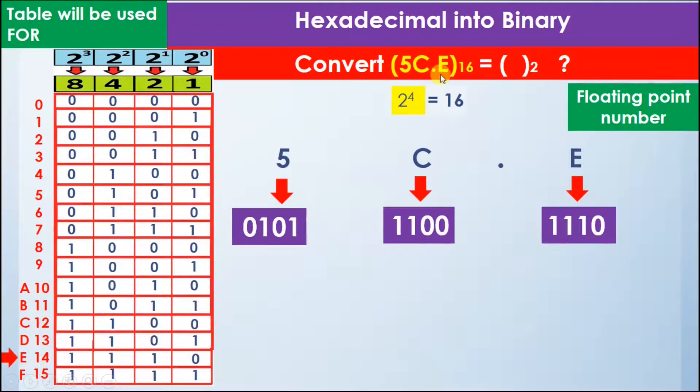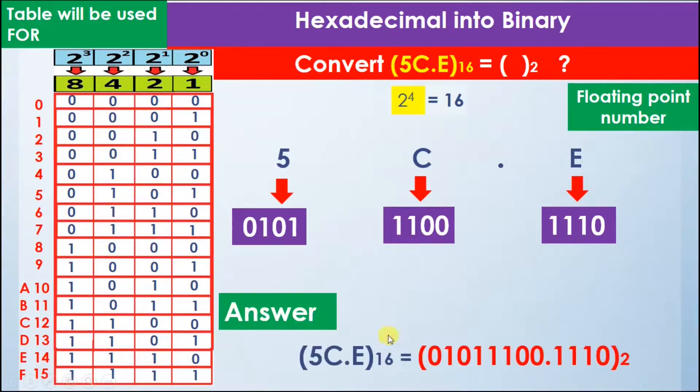Now we have calculated all three values of the three digits that are given. If we have more digits in the example, then we will calculate the binary value of all of the digits. We have calculated the binary value of these three digits: 5, C, and E. We will combine them all together to become one number.